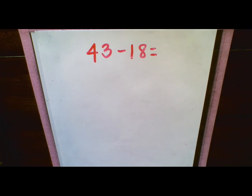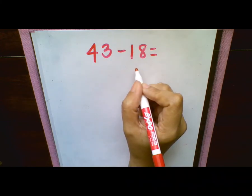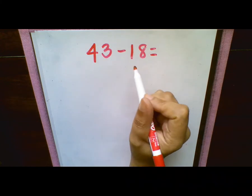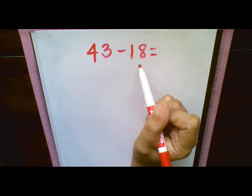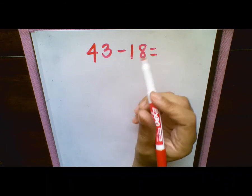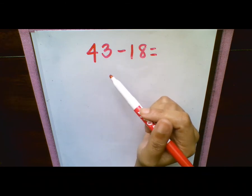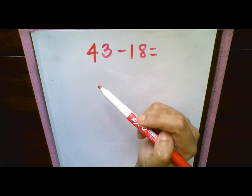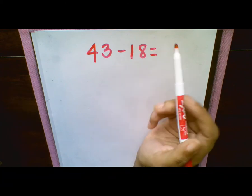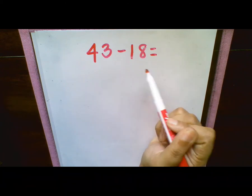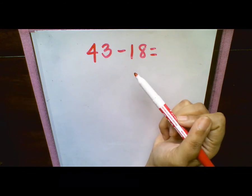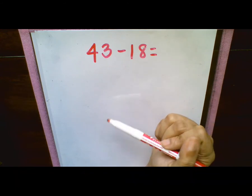So our first problem we have here is 43 minus 18. So with this problem, you can use compensation to make the numbers easier to subtract. So if we look at 18, we can see that it's easier to subtract 20 than it is 18. So here's one way to look at it. So what we're going to do is we're going to change both of our addends by adding or subtracting the same amount. Then we're going to subtract using mental math. So again, we just established that it's going to be easier for us to subtract 20 than it is going to be 18.